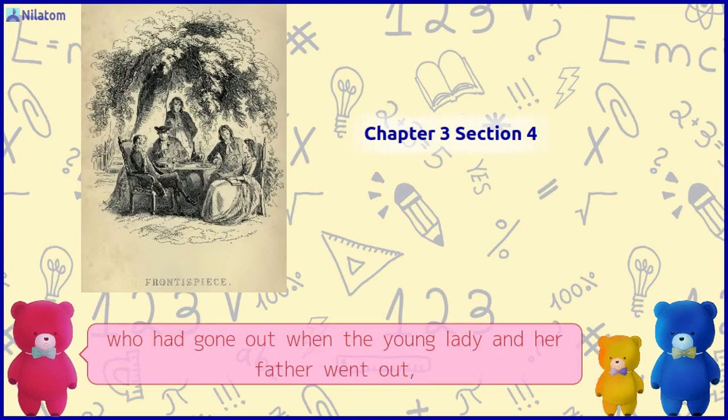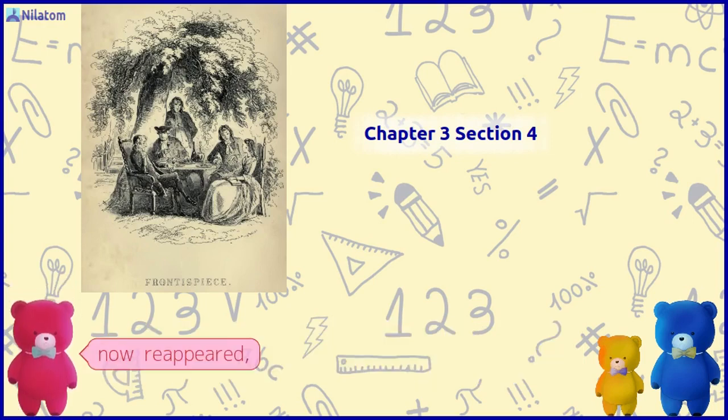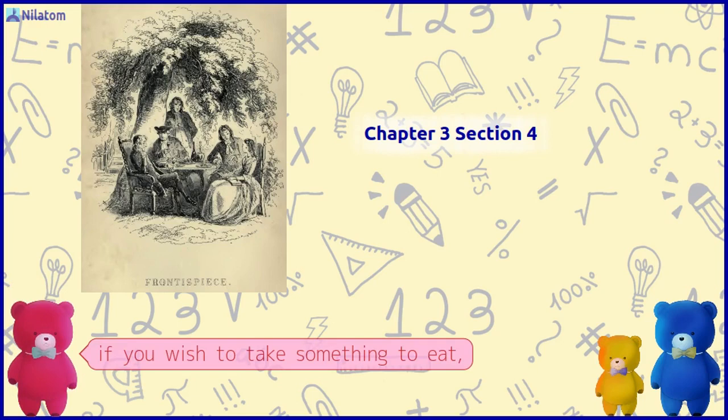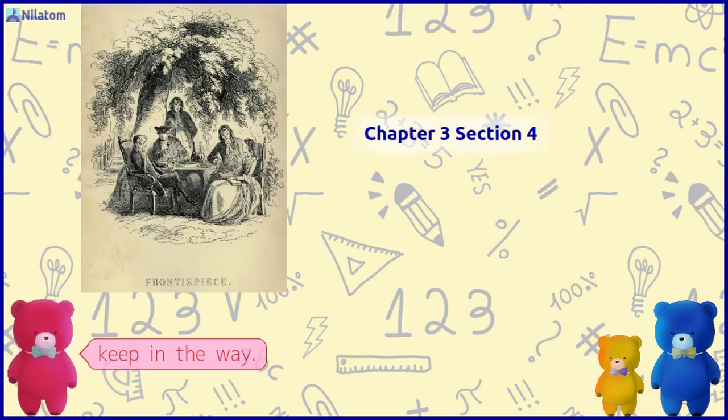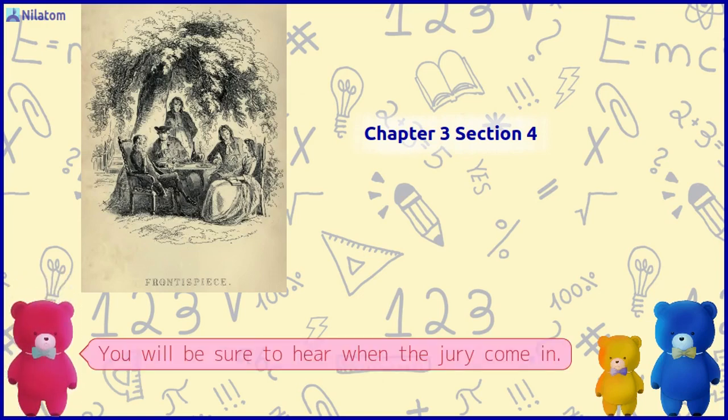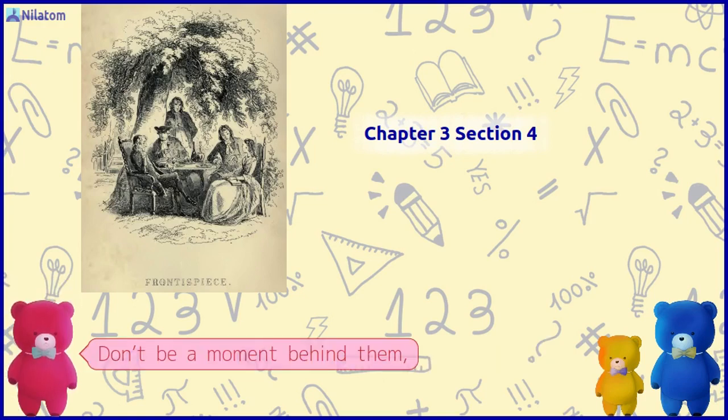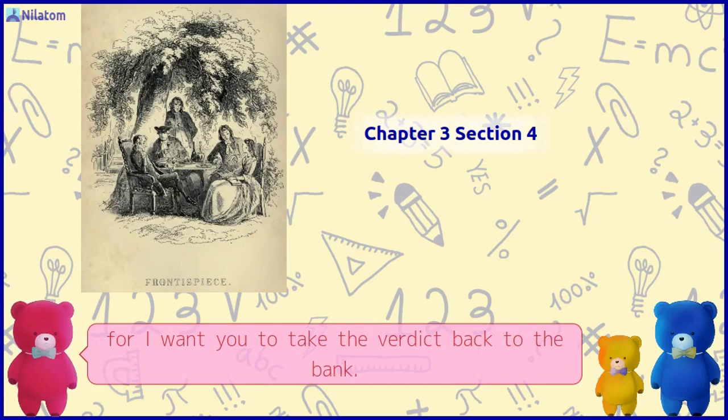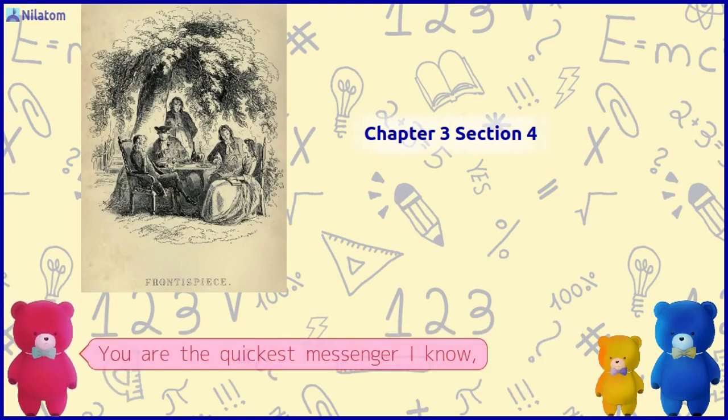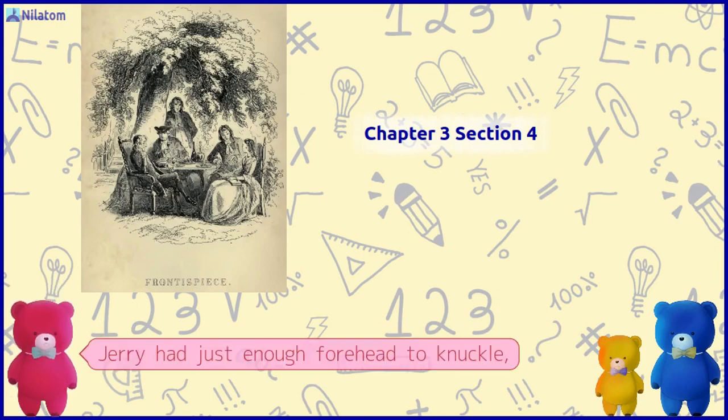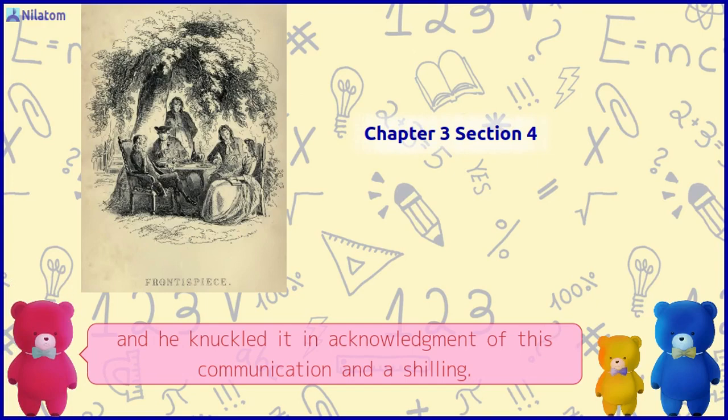Mr. Lorry, who had gone out when the young lady and her father went out, now reappeared and beckoned to Jerry, who, in the slackened interest, could easily get near him. Jerry, if you wish to take something to eat, you can. But, keep in the way. You will be sure to hear when the jury come in. Don't be a moment behind them, for I want you to take the verdict back to the bank. You are the quickest messenger I know. Jerry had just enough forehead to knuckle, and he knuckled it in acknowledgement of this communication and a shilling.